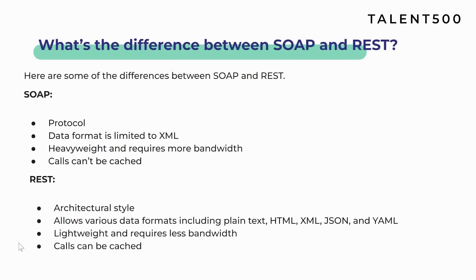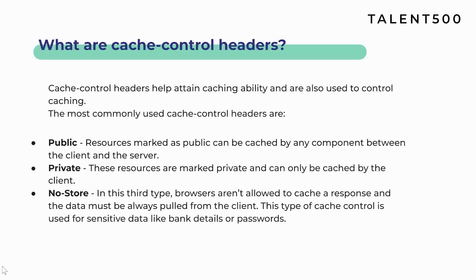The next question is: what is the difference between SOAP and REST? SOAP is a protocol used in web applications, whereas REST is an architectural style. The data format in SOAP is limited to XML, whereas REST allows different formats like text, JSON, HTML, XML, and YAML. SOAP is heavyweight and requires more bandwidth, whereas REST is lightweight and requires less bandwidth. SOAP calls cannot be cached, whereas REST provides the ability to cache calls.